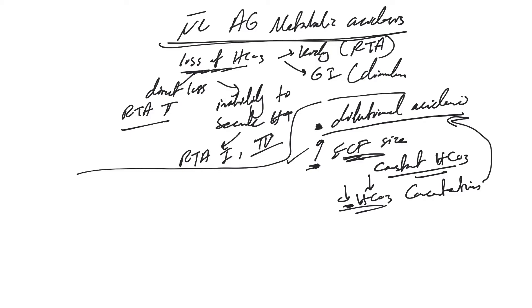Dilutional acidosis is a normal anion gap metabolic acidosis. If it's really bothering and the bicarb is going low, you can add bicarb to the solution to fix it — just increase the amount of bicarb — or you stop the fluids, the ECF size returns to normal, and the bicarb concentration will improve. As simple as that.